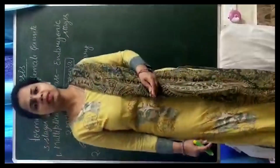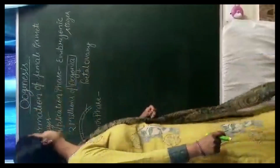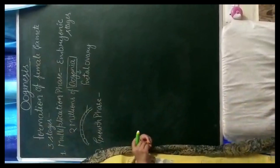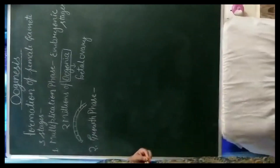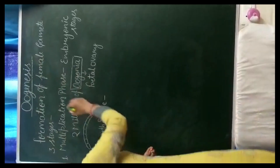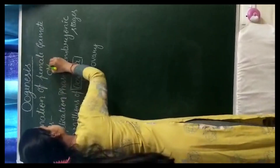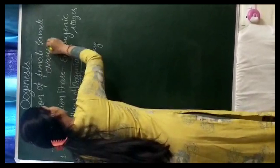Hello students, today we will start a new topic: oogenesis. Oogenesis is the formation of mature female gamete or ovum. The process of formation of mature female gamete is called oogenesis. It occurs in the ovary.